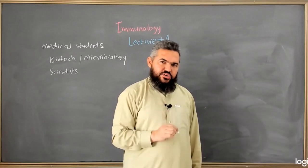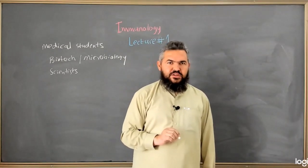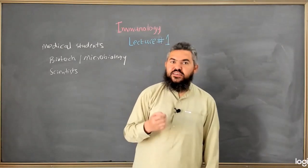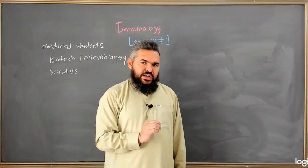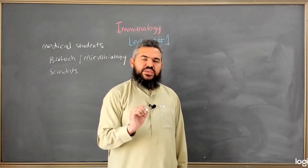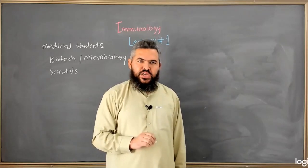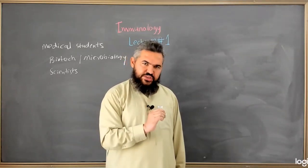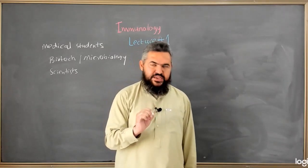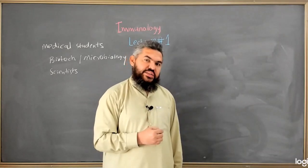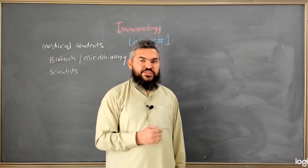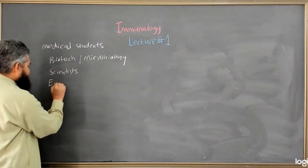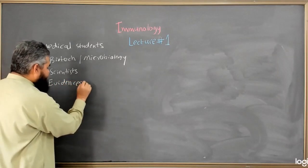When you talk about immunology, the first and very basic question is: do we have an immune system? Or you can put it another way: what are the evidences that there is an immune system in living organisms? The immune system is a system that protects living organisms from different pathogens like bacteria, viruses, parasites, etc. In this particular video, I'm going to give you some of the evidences which prove that living organisms do have an immune system.